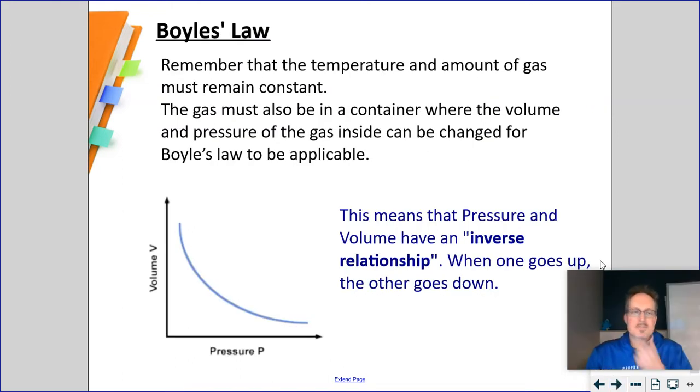Well, if we take a look at Boyle's Law and we were to graph Boyle's Law relationship, we would see that Boyle's Law has an inverse relationship. Meaning, as one of the variables goes up, the other one, by default, has to go down. This is the nature of the formula. We call this an inverse relationship. When one moves in one direction, the other one's going to move in the opposite direction.